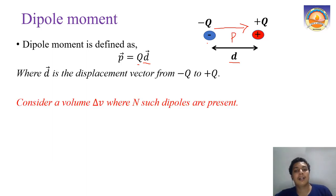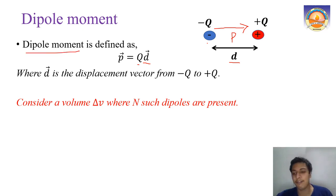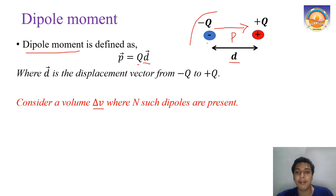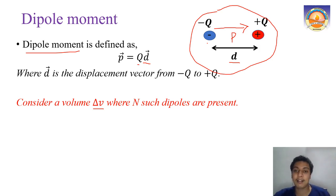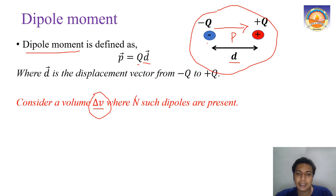Now consider a volume ΔV. In a dielectric material you have n number of atoms, and when you apply an electric field, n number of dipole moments are formed. Let us consider a small volume ΔV containing n such dipoles.